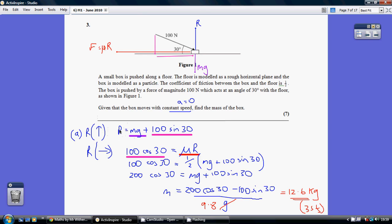Our force upwards, R, is equal to two bits. It's equal to the weight which is mg, and this component of this force. So this component downwards is 100 sin 30, it's opposite the 30.